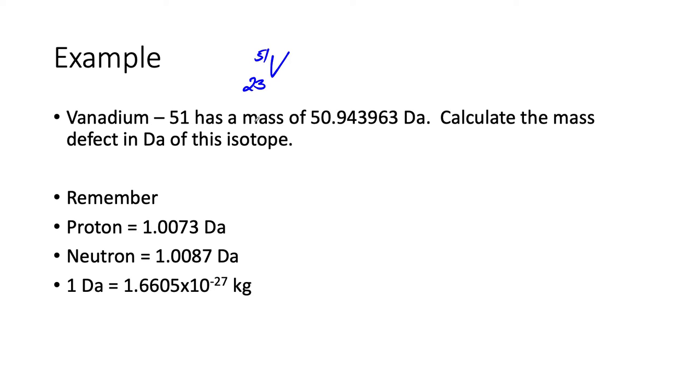Vanadium-51 has a mass—the actual mass is 50.9439. That's a lot, we'll figure this out. We don't have to use all these, but we'll just do it. At this point, here's the data we need and we'll come back to this slide every now and then.